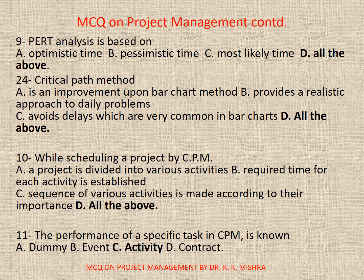Question 9: PERT analysis is based on — Options are: A. Optimistic time; B. Pessimistic time; C. Most likely time; D. All the above. Correct option is D: All the above. Question 24: Critical path method — Options are: A. Is an improvement upon bar chart method; B. Provides a realistic approach to daily problems; C. Avoids delays which are very common in bar charts; D. All the above. Correct option is D: All the above.